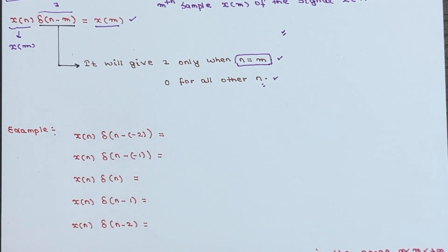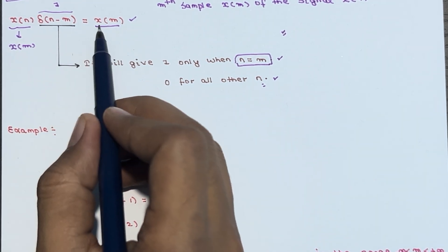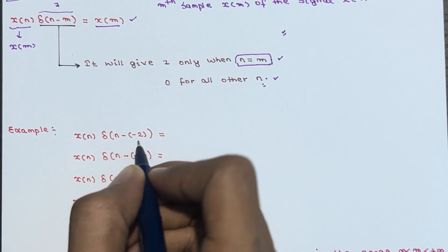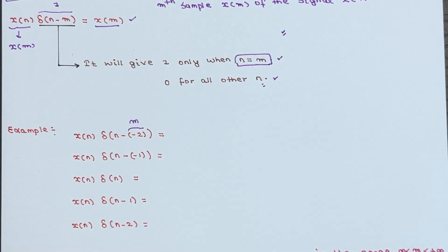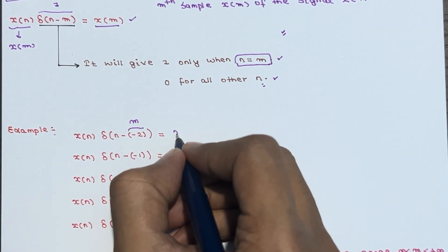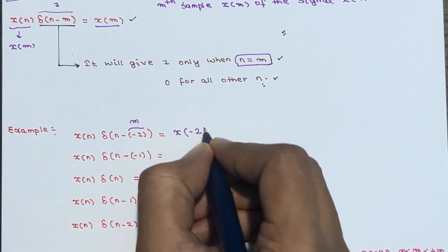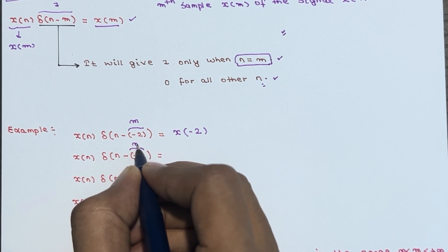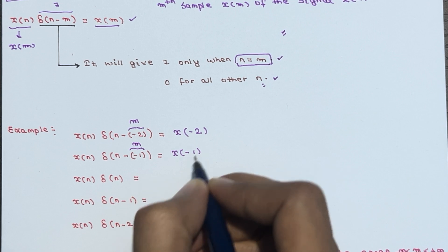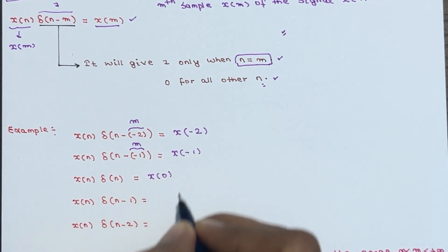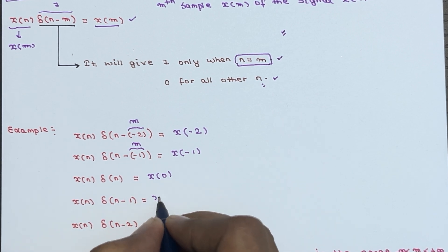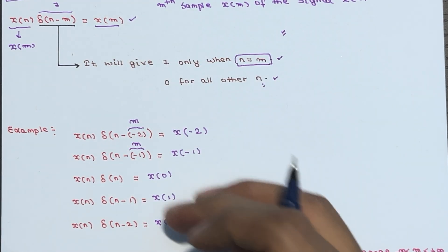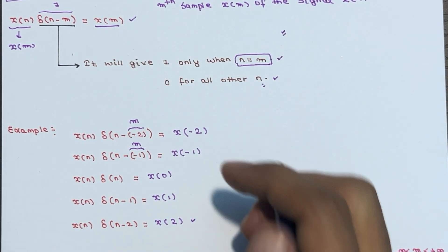For example, for x(n)·δ(n-(-2)), m is equal to -2, so the output is x(-2). For δ(n-(-1)), m is -1, so you get x(-1). For δ(n), m is 0, so you get x(0). For m equals 1 you get x(1), and for m equals 2 you get x(2). This is why understanding the behavior of δ(n-m) first makes everything else easier.